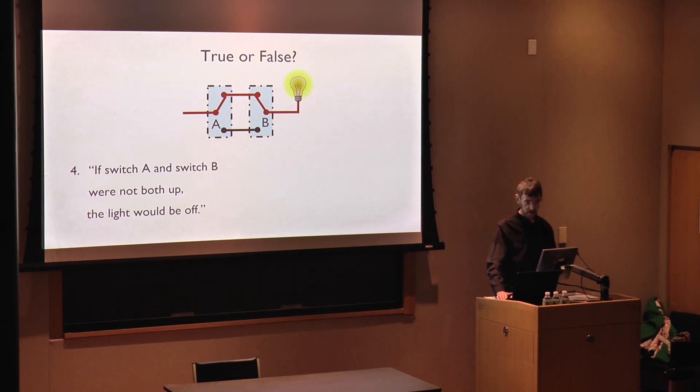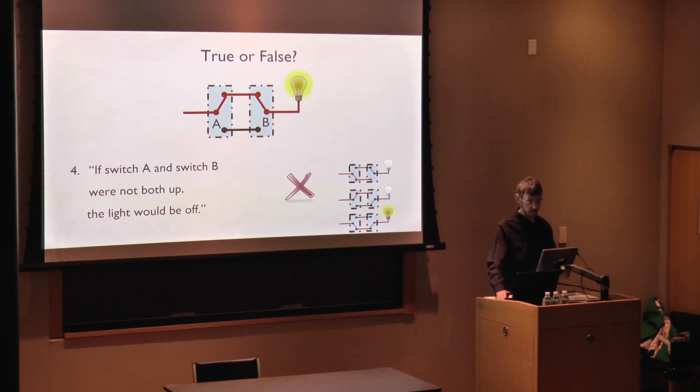And I think this is for the following reason. We now consider three alternate states of affairs. It could be that just switch A is down, just like before, and then the light would be off. And similarly, it could be that just B is down and the light would be off. But it could also be that both switches are down. And then the light would be on again. And for that reason, most people hesitate or disagree with the sentence.